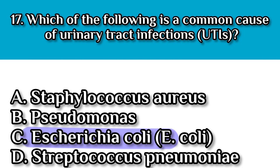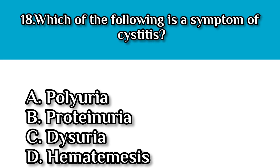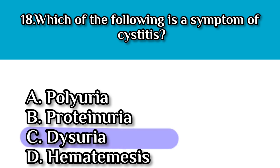Question number eighteen: Which of the following is a symptom of cystitis? The answer here should be C, dysuria, because dysuria, also called painful urination, is a hallmark symptom of bladder inflammation, which is also called cystitis.